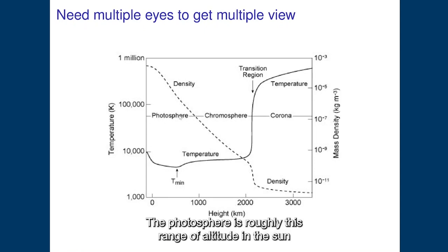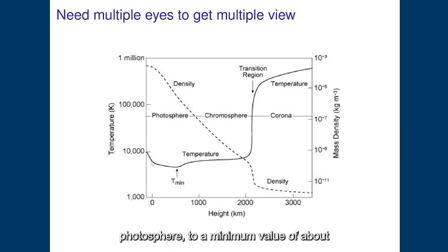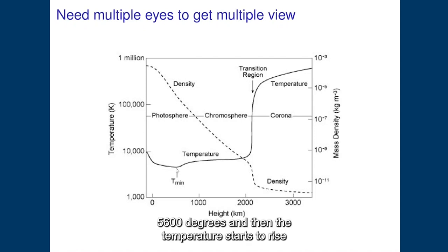The photosphere is roughly this range of altitude in the solar atmosphere where the temperature decreases from a value of about six thousand degrees at the bottom of the photosphere to a minimum value of about five thousand six hundred degrees. And then the temperature starts to rise again from that minimum.